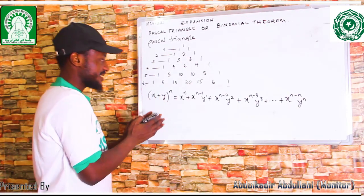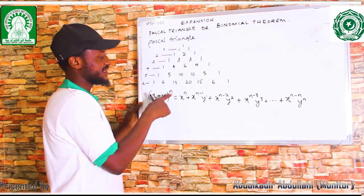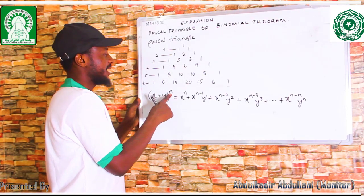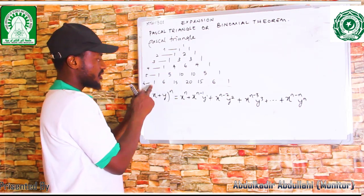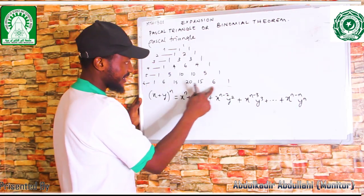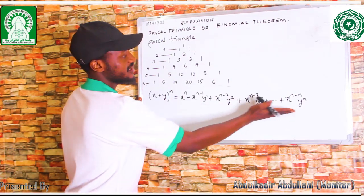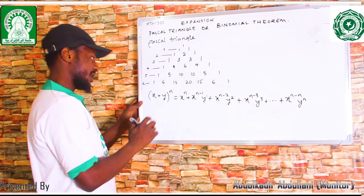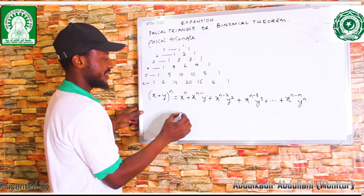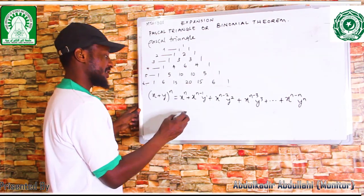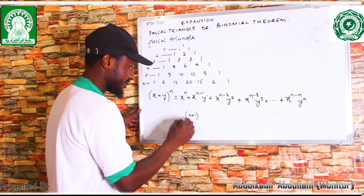When you expand, you check the power given. If the power given is, for example, 6, then you use the Pascal's Triangle coefficients to attach with the terms. There is a rule which says: for any expansion, the number of terms is n plus 1.